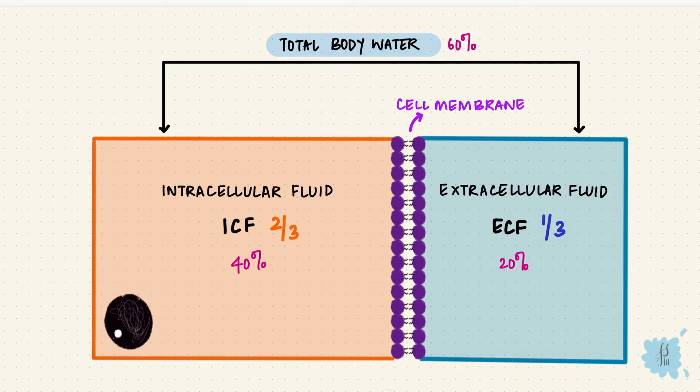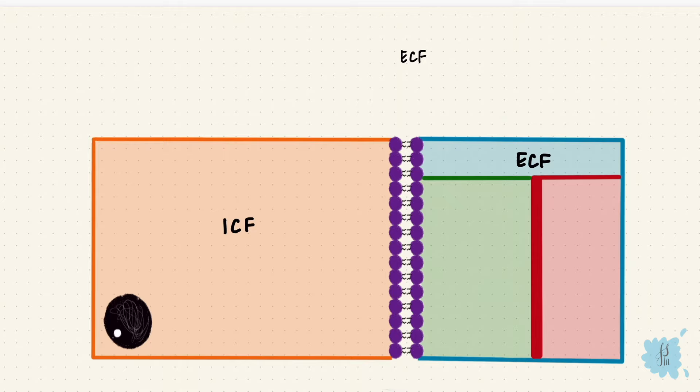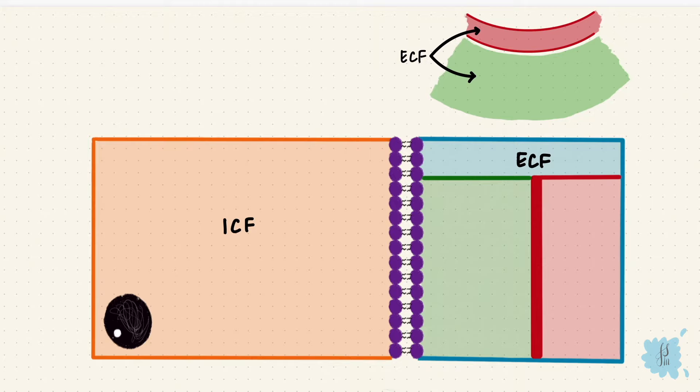The ECF is further divided into fluid inside vessels and fluid outside vessels. Inside the vessels would be the plasma; outside is the interstitial fluid. The interstitial fluid is larger, being around three-quarters of the ECF, so the plasma is a quarter. What's between these two? A capillary membrane.